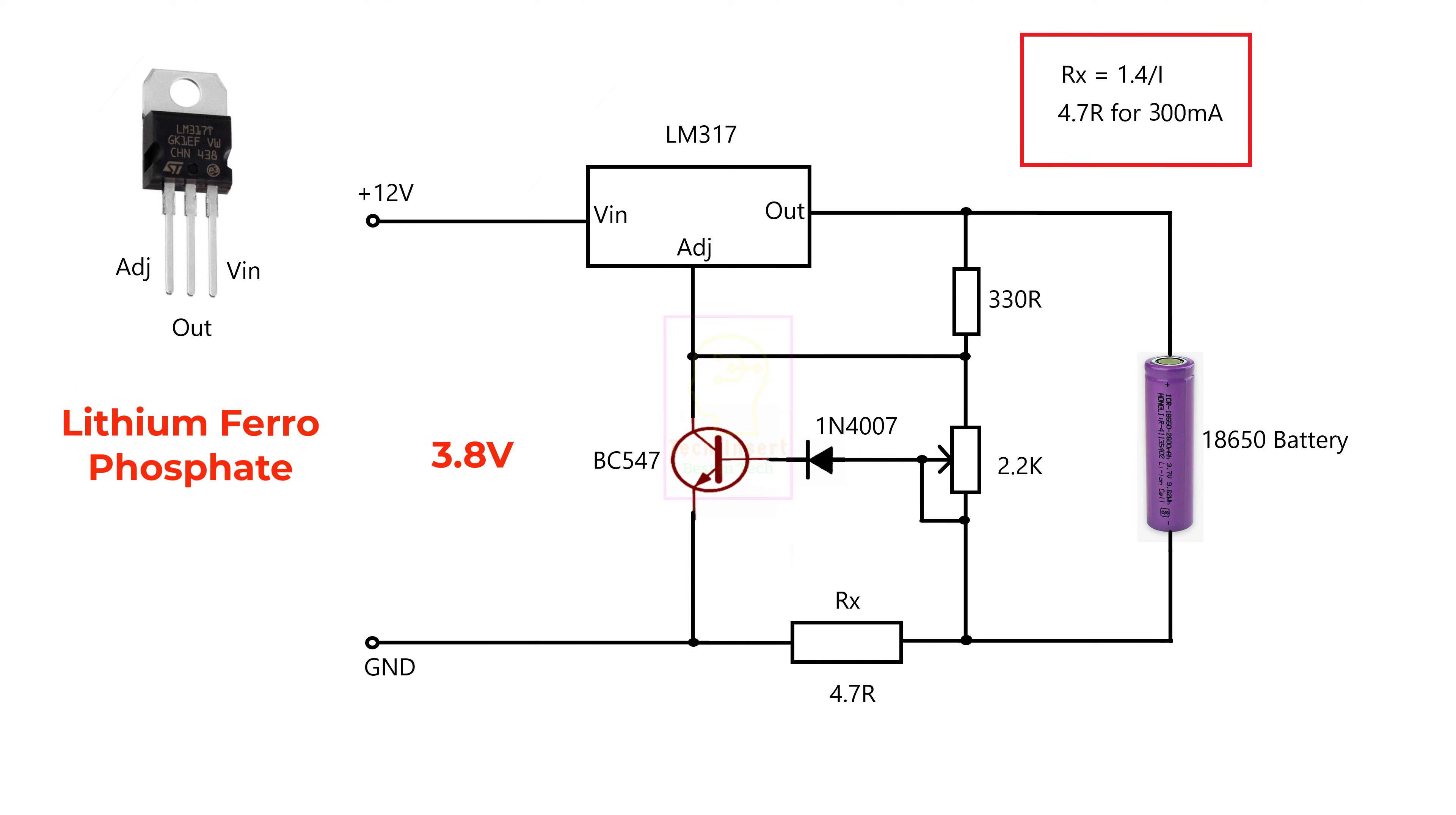For example, if you are using lithium ferro battery, fix the output voltage to 3.6 to 3.8V. If you are using lithium battery, fix the output voltage to 4.2V, and so on.